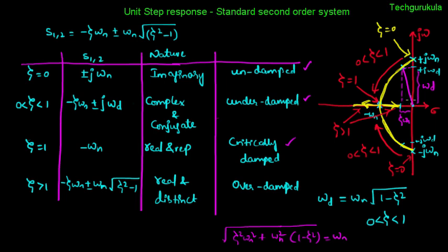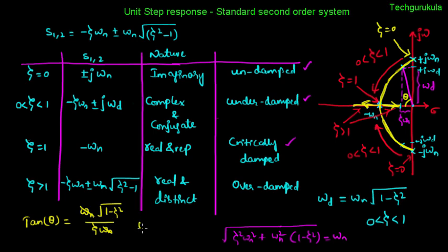We define angle theta on the S-plane: tan(theta) equals opposite side over adjacent side, which is omega_d over zeta omega_n. Substituting omega_d = omega_n times square root of (1 minus zeta squared) and cancelling omega_n, we get theta = tan inverse of (square root of (1 minus zeta squared) over zeta). This is an important parameter that will be used in the time response for the underdamped case. Having understood the nature of the roots, we will now investigate the unit step response case by case.